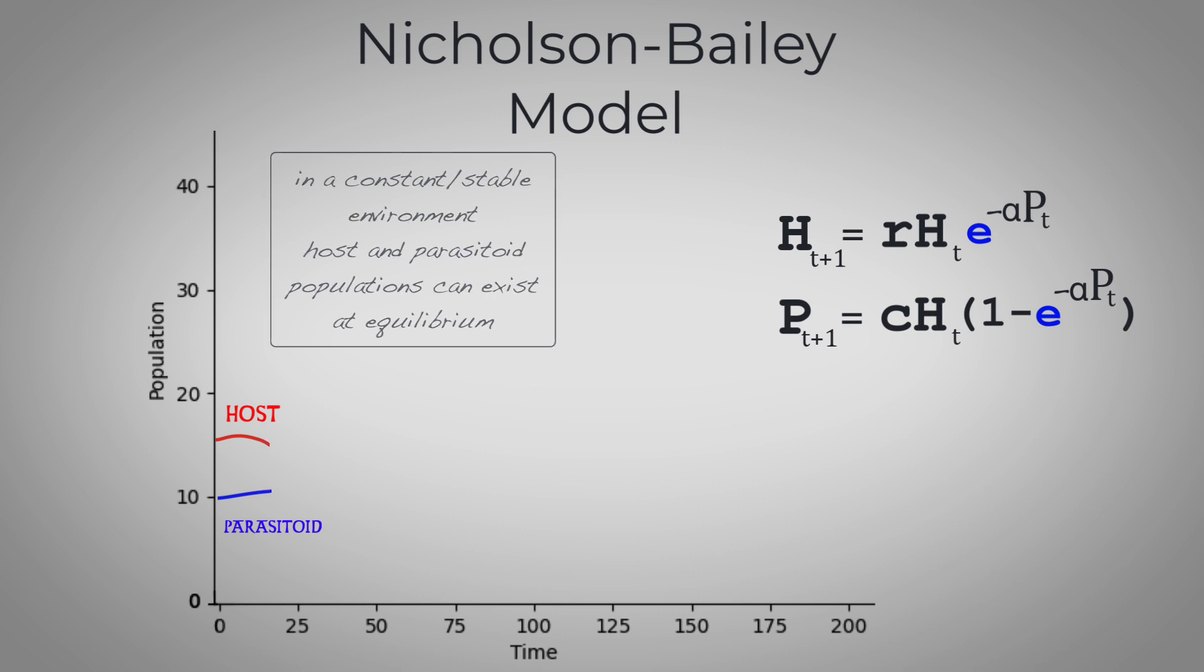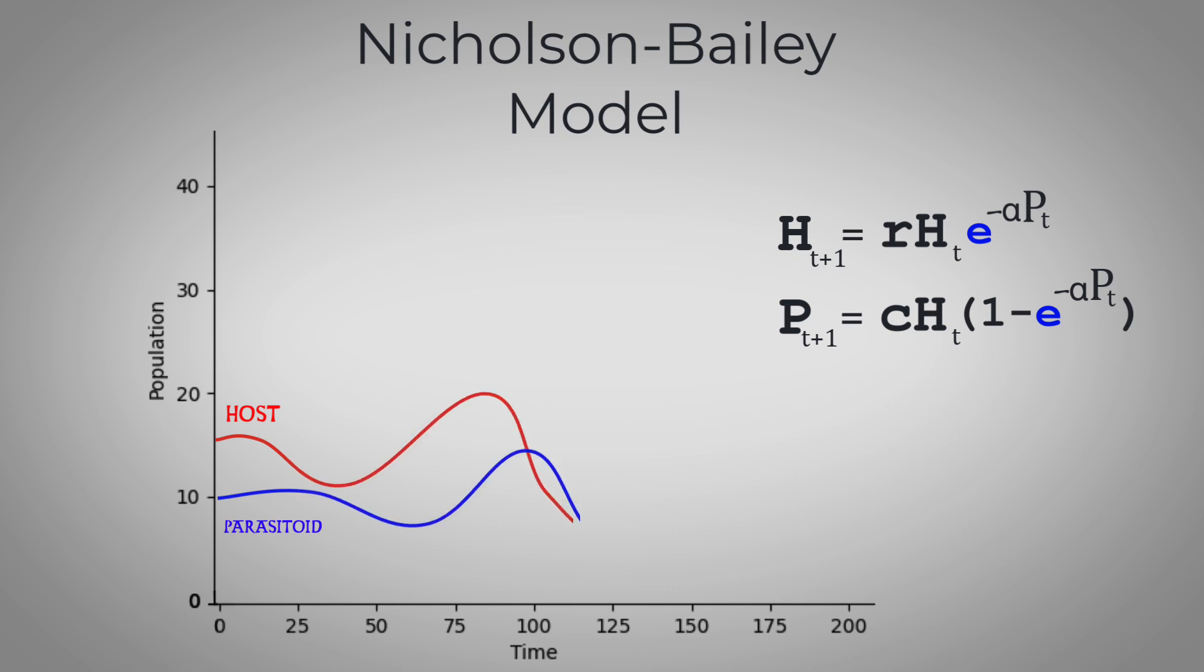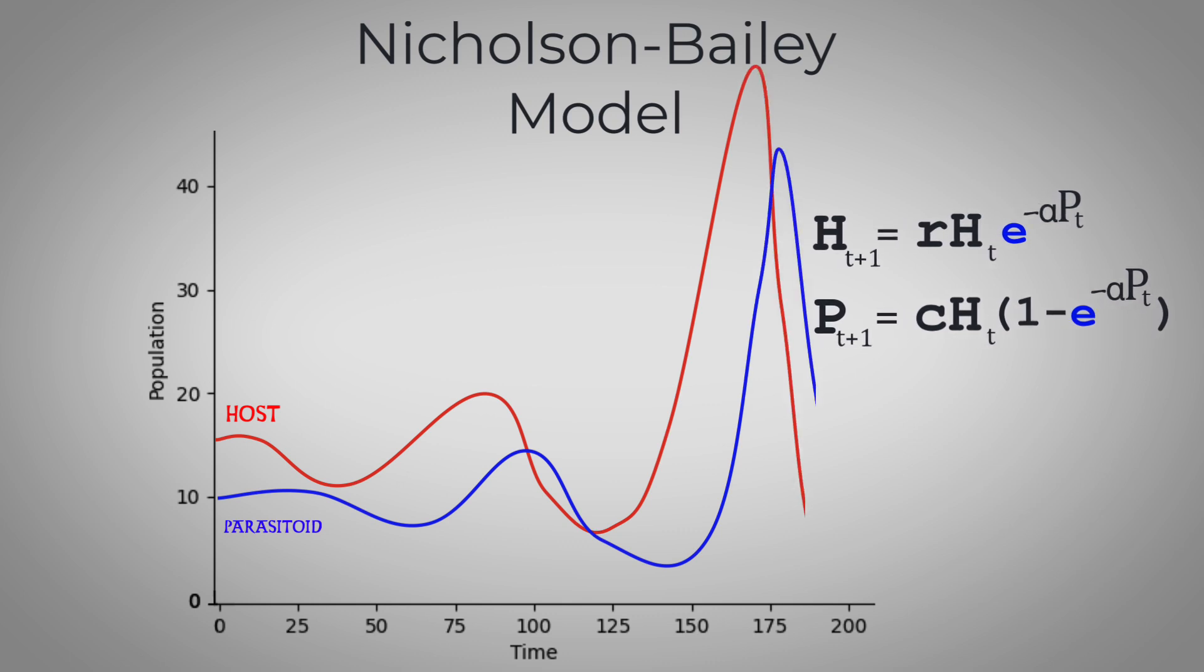Even a small environmental disturbance would cause population oscillations that would grow in amplitude, eventually leading to the local extinction of both the hosts and the parasitoids, which you would think would be fairly detrimental to this model. Well, to explain why real-world populations of hosts and parasitoids actually exist with a degree of stability and don't just go extinct,